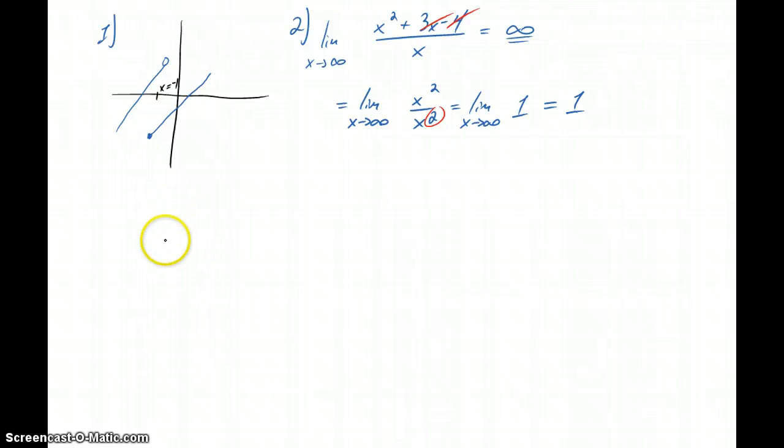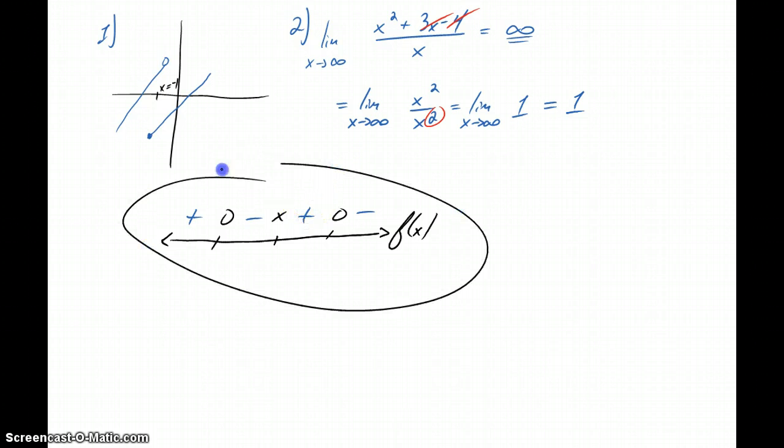We also had some questions that dealt with constructing sign charts for a function to solve some inequality problems, where you would, for that given function, determine where it has zeros or where it maybe has points where it's undefined, and then you would fill in the results of positive, negative, in between. So for those sign chart problems, and it'll say specifically in the question, use a sign chart to solve this problem, you'll want to make sure that you are showing that sign chart and showing that rationale for how you came up with your solution.